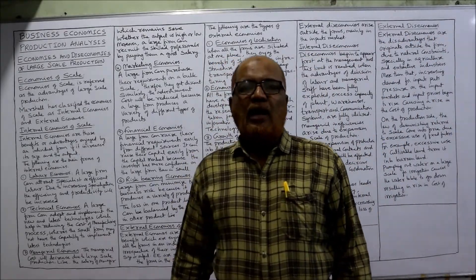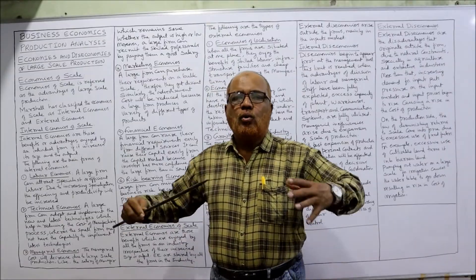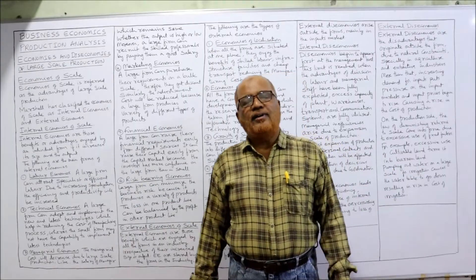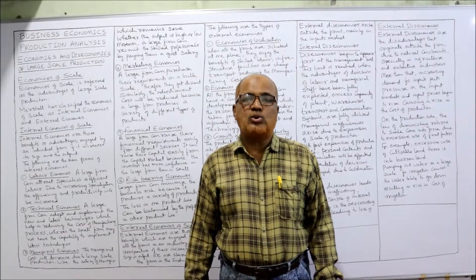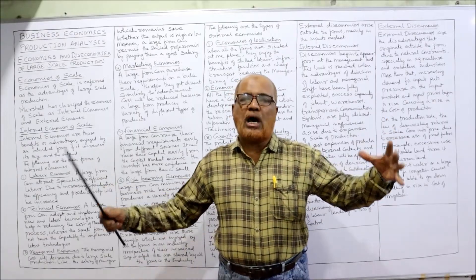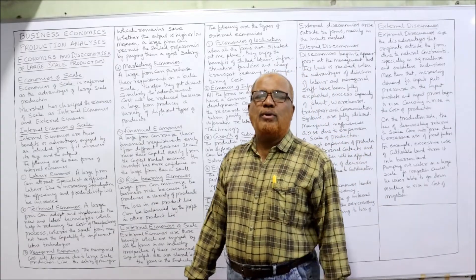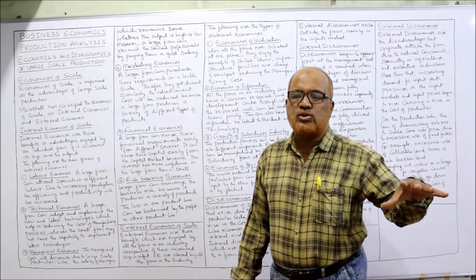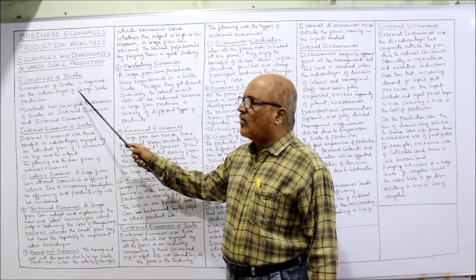Now the topic is economies and diseconomies of large scale production. When goods are produced on a large, bulk scale, the business will get a number of advantages, and apart from that a few disadvantages are also there. What are the advantages and disadvantages of making goods on large scale — that's what I'm going to explain. First, economies of scale: the advantages which a business will get by producing goods on large scale.